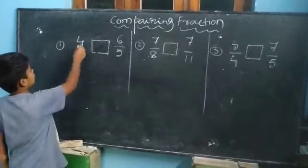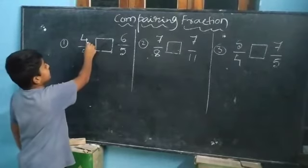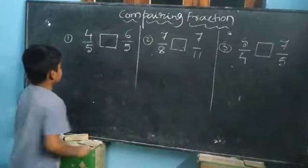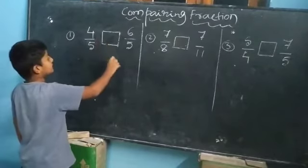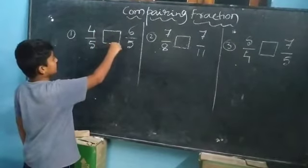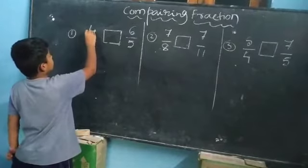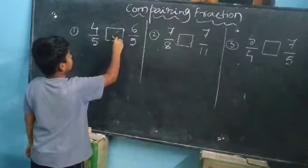First problem is 4 by 5 and 6 by 5. We should see numerator and denominator. In numerator, it is not common. And denominator it is common. When denominator is common, which is the highest numerator, that is greatest. Now 4 and 6. 6 is the higher. And we should mark to 6.